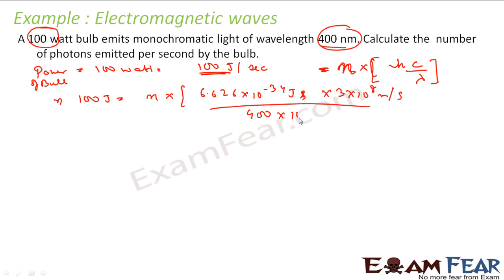And then I have lambda. Lambda is 400 nanometer. So I will convert this into meter. 1 nanometer is equal to 10^-9 meter. So I will say 400 nanometer is nothing but 400 × 10^-9 meter.